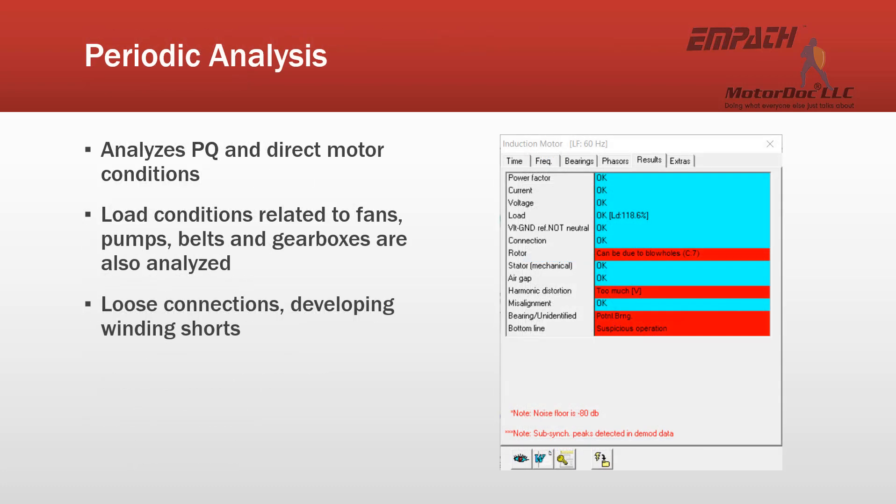The periodic analysis looks at not just the power quality and direct motor conditions, but also looks at load conditions related to fans, pumps, belts, gearboxes, and other related equipment. It also will identify loose connections, developing winding shorts, and other conditions that are detrimental to your system.